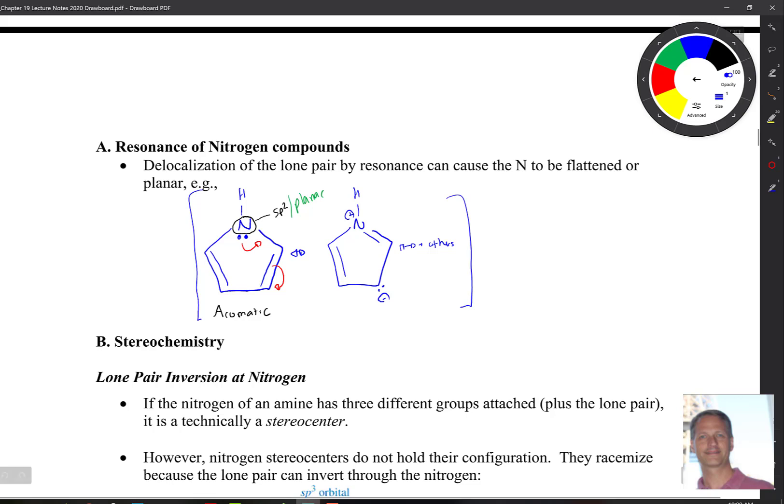The other case that we're going to see, especially in the chapters coming up, chapter 21, are amides. Amides are R groups connected to a carbonyl and then a nitrogen. The nitrogen can have two different attachments. One thing we know is that there is resonance in the structure. The question is, what is the hybridization of that nitrogen? Is it more sp3 or is it more sp2?